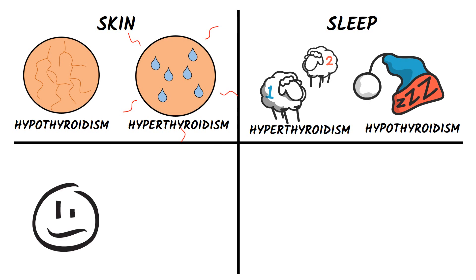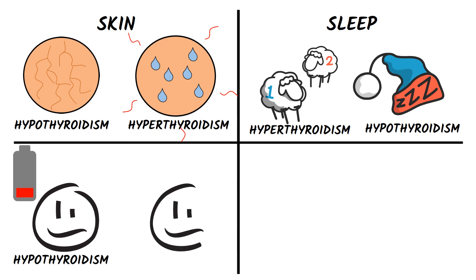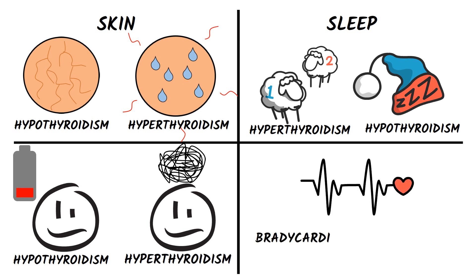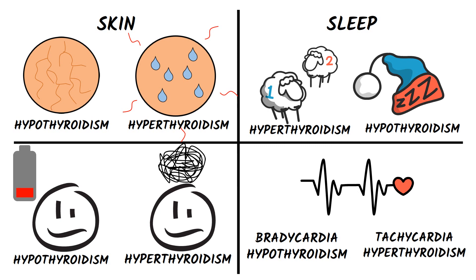Experiencing lethargy and slowing of intellectual and motor activities in thyroid hypofunction, and tremors or anxiety in thyroid hyperfunction. A slow heart rate called bradycardia may appear in hypothyroidism, and an accelerated heart rate called tachycardia as well as palpitations may appear in hyperthyroidism.